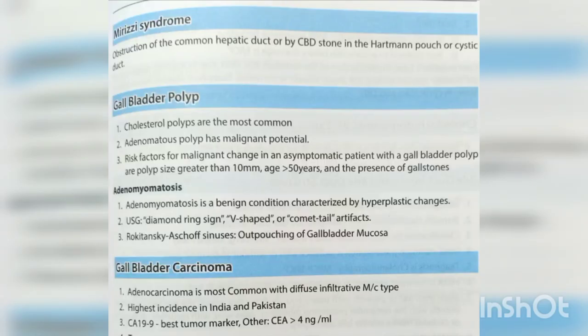Mirizzi syndrome: obstruction of the common hepatic duct by a CBD stone in Hartmann's pouch or the cystic duct. Gallbladder polyps: cholesterol polyps are the most common; adenomatous polyps have malignant potential. Risk factors for malignant change in an asymptomatic patient with a gallbladder polyp include: polyp size greater than 10 mm, age greater than 50 years, and presence of gallstones.